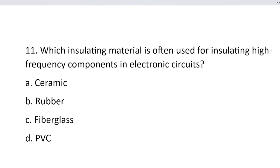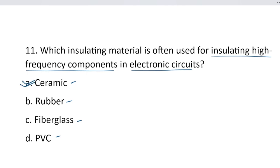Question number 11. Which insulating material is often used for insulating high-frequency components in electronic circuits? Option A, ceramic. Option B, rubber. Option C, fiberglass. And option D, PVC. The correct answer is option A, ceramic — because ceramic has low dielectric loss, meaning good dielectric strength, making it suitable for high-frequency components.